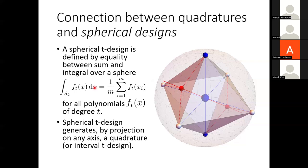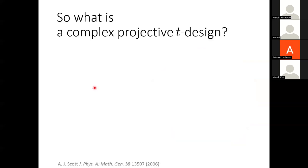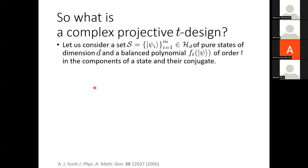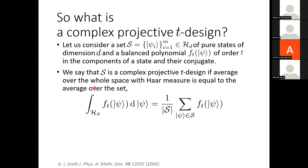Now let me consider what we mean by a complex projective t-design. In quantum mechanics terms: take a finite set of states, and consider balanced polynomials of the components of the state and their conjugates. We are in dimension d, and this specific set of states is called a t-design if averaging over the Haar measure over the complex projective space is equivalent — allowing us to exactly evaluate averages of polynomials up to degree t.